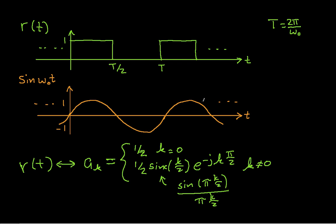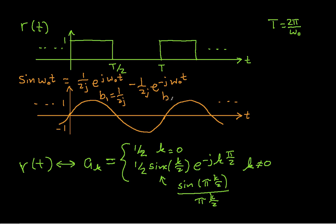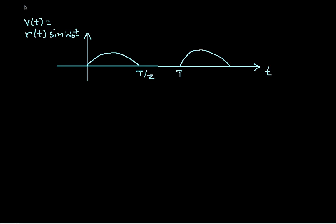The Fourier series coefficients for the sine wave: we can write sine as (1/2j)e^{jω₀t} minus (1/2j)e^{-jω₀t}. We'll call the Fourier series coefficients of the sine wave b. We know that b₁ = 1/(2j) and b₋₁ = -1/(2j), and all other Fourier series coefficients are zero for the sine wave.